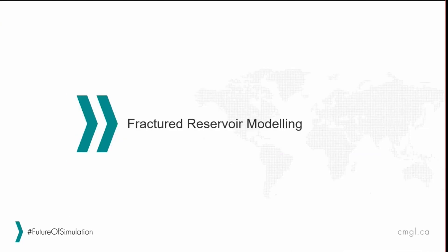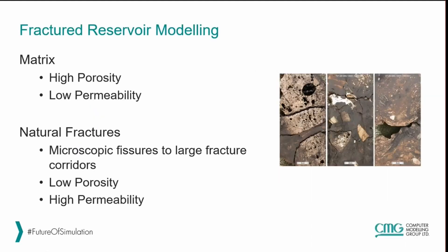To begin with, I'll do a little bit of background on fractured reservoir modeling, which is typically used for modeling flow through dual continuous systems. With fractured reservoirs, we can typically divide the reservoir into two main components: the matrix and the natural fractures. The matrix is typically our rock portion, which would have a high porosity and a low permeability associated with it in many fractured reservoirs.